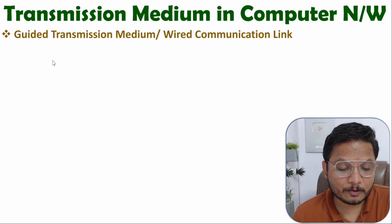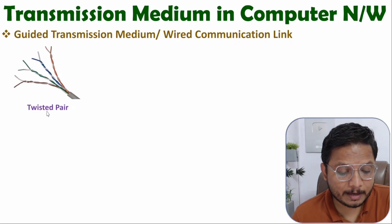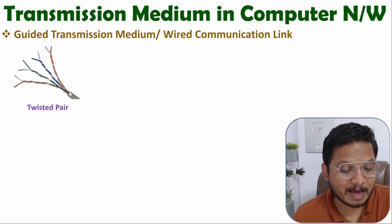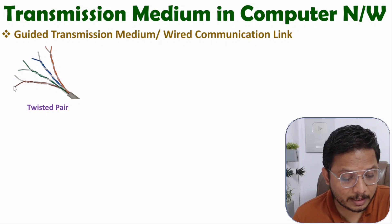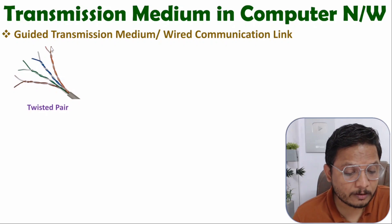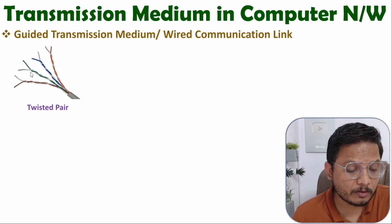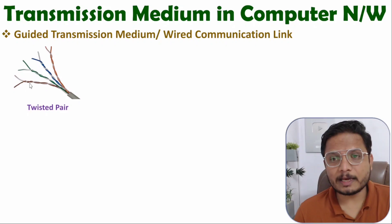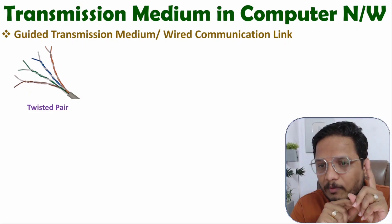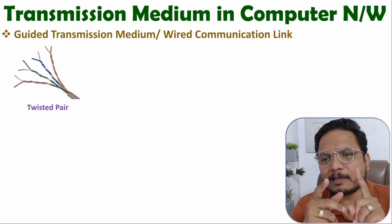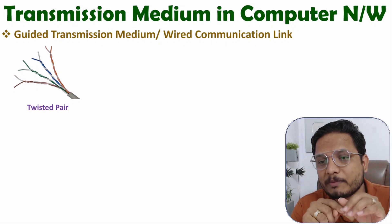The first category of guided transmission medium is the twisted pair cable. Looking at this diagram, you can see one cable with four twisted pairs inside it — first, second, third, and fourth. With this cable, we have a total of four twisted pairs. In a twisted pair, we insert electrical signals, and with one twisted pair we can provide electrical signaling.